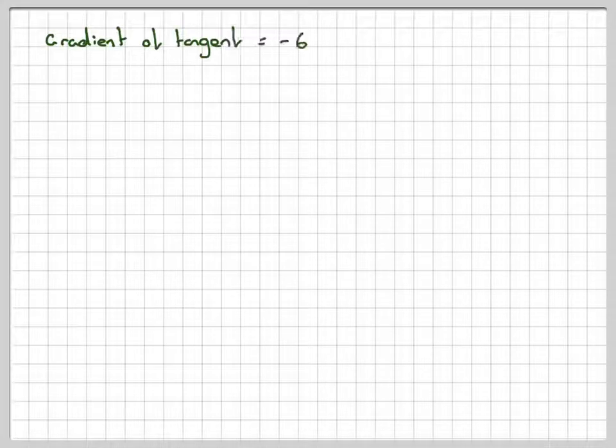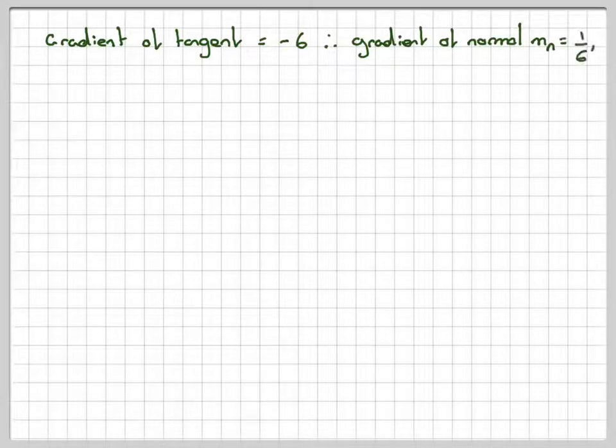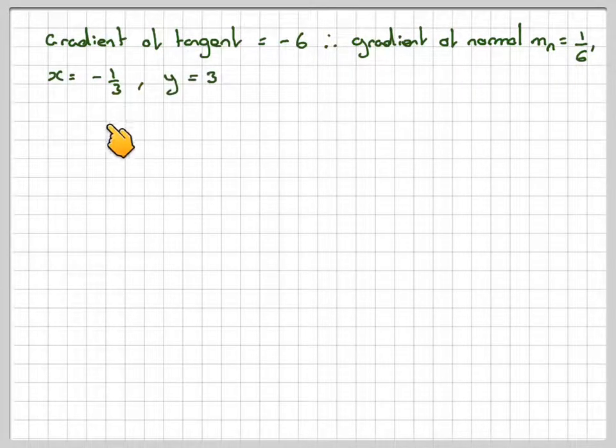So now we have the gradient of the tangent is minus 6, but we want the gradient of the normal. So it's going to be 1 over 6. Remember, those two multiplied together must make minus 1. x is minus 1 third, and y is equal to 3.